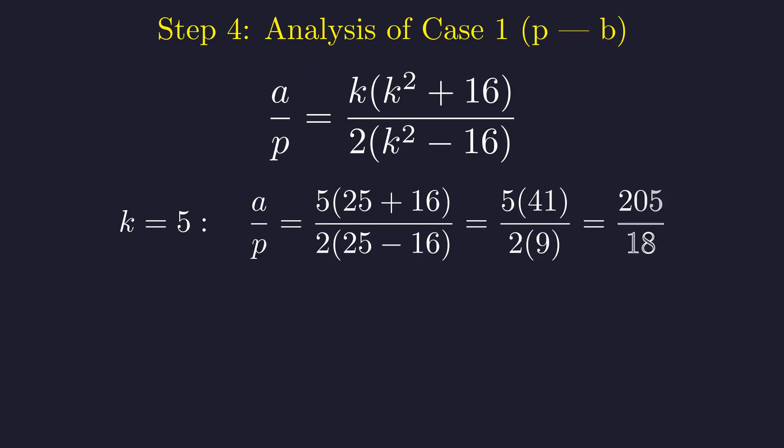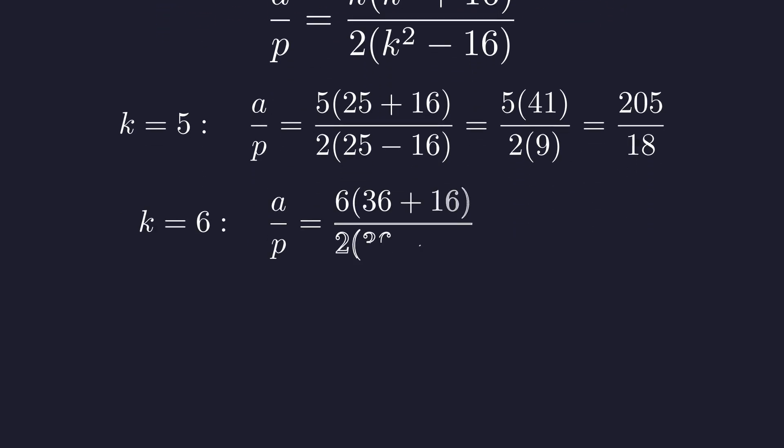When k equals 5, we get a denominator of 18 in reduced form. But 18 isn't prime and it's not 1, so this case is impossible. When k equals 6, the denominator becomes 5. 5 is prime, so this works. We get p equals 5.